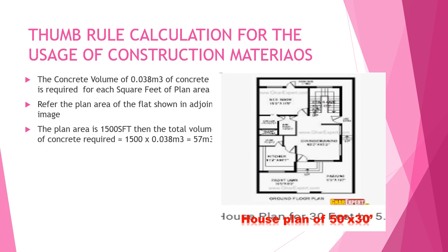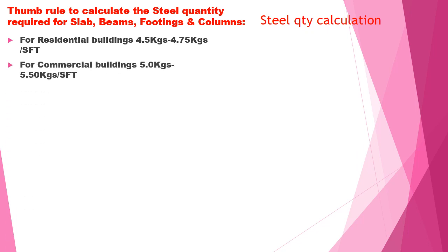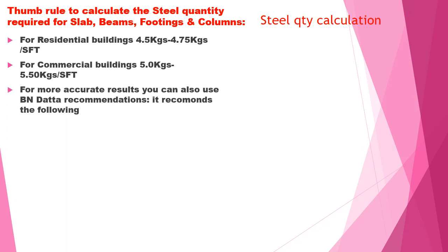This is the image of the 1500 square feet, that is a 50 by 30 house plan. To calculate the steel quantity required for slabs, beams, footings, and columns: for a residential building it will be 4.5 to 4.7 kg per square feet; for a commercial building it will be 5 to 5.5 kg per square feet, subject to it not being a very tall building. For more accurate results, refer to BN data recommendations.